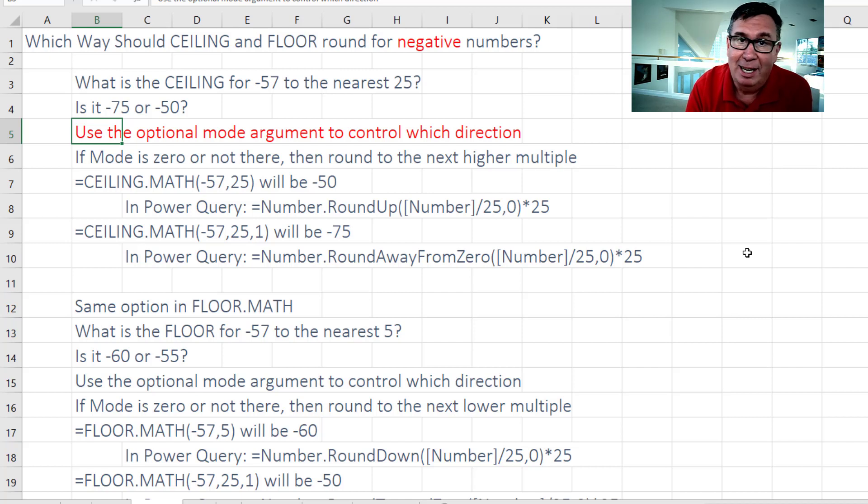Now, it's interesting. In the old days, ceiling and floor went the wrong way. And when they introduced ceiling.Math and floor.Math, they always went in the correct direction. But they added an optional mode argument that could force it to go in the wrong direction.